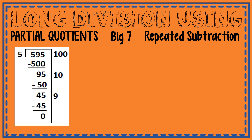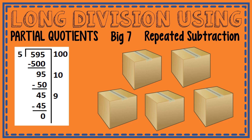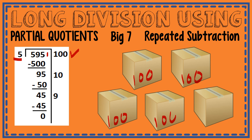Let's add a story problem to understand it better. The fourth graders at Zavala Elementary held a coat drive. They collected 595 coats to donate to five shelters in the area. Let's find out how many coats went to each shelter. I have 595 coats being divided equally to 5 shelters. Can I put 100 coats in each box? Yes — so I take away 500, and now I have 95 coats left.